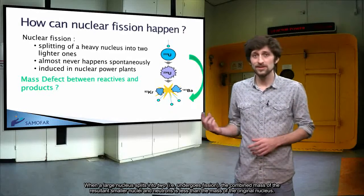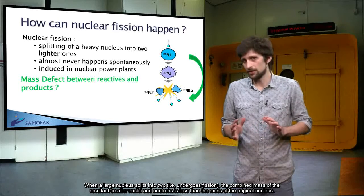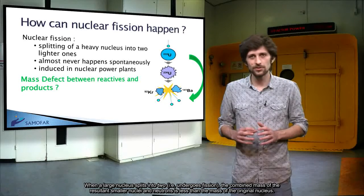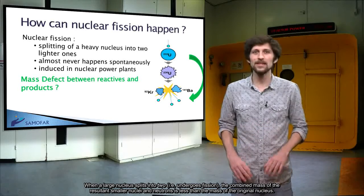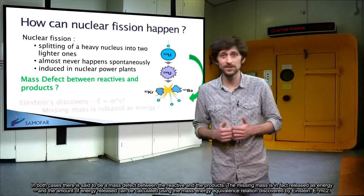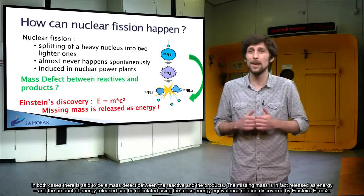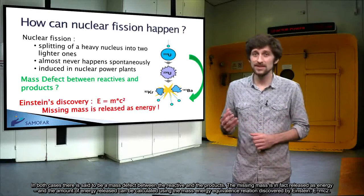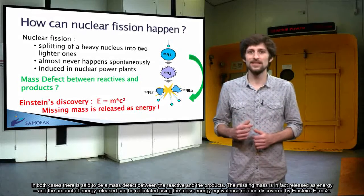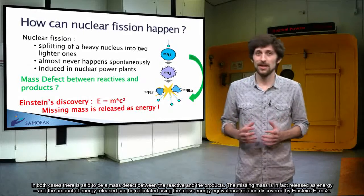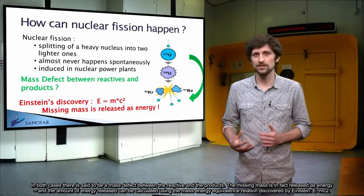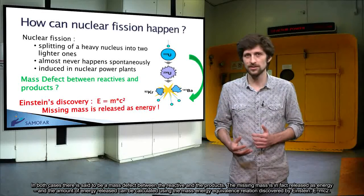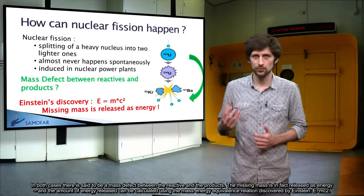When a large nucleus splits in two, i.e. undergoes fission, the combined mass of the resultant smaller nuclei and neutrons is less than the mass of the original nucleus. In both cases, there is said to be a mass defect between the reactants and the products. The missing mass is in fact released as energy, and the amount of energy released can be calculated using the mass-energy equivalence relation discovered by Einstein, E equals mc squared.